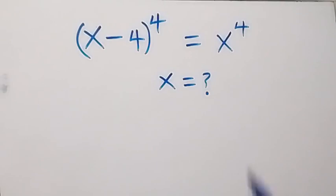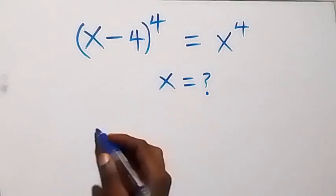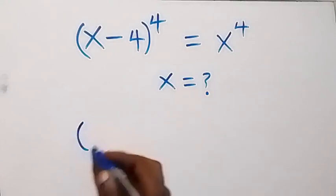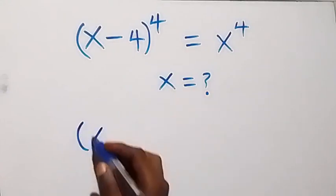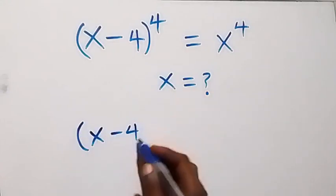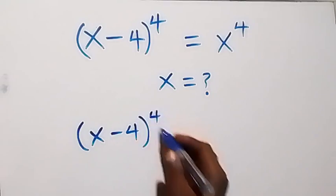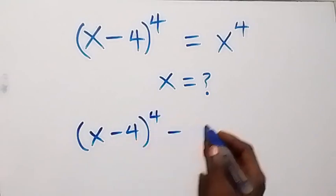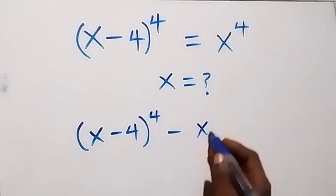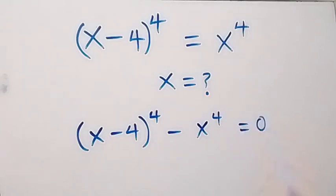From here, let's take x raised to the power 4 to this side and this becomes x minus 4. So we have 4 raised to the power 4 minus x raised to the power 4 equals to 0.